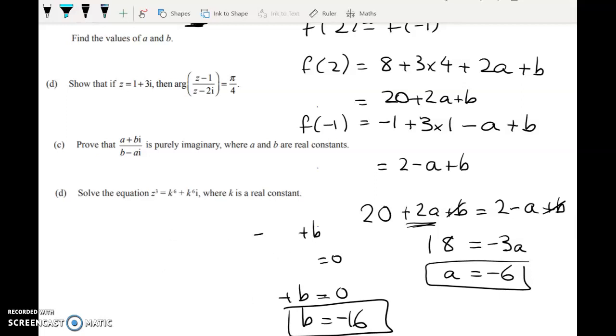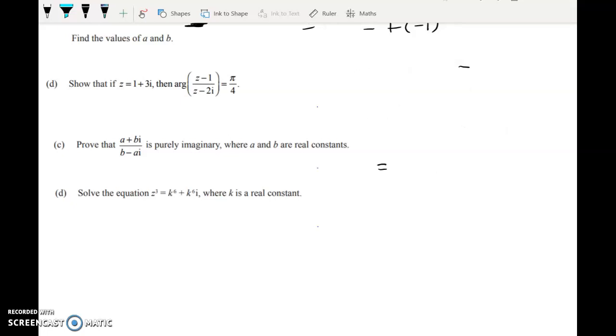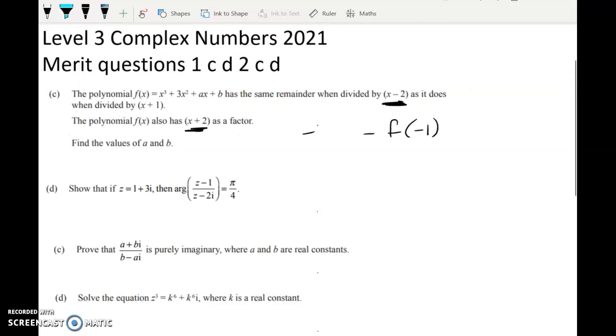In the next question, we have to take a complex number, do some stuff with it, and then show that its argument is pi on four. And remember the arg of a complex number is the angle that it makes with the positive direction of the axis. So if z is up here in the first quadrant, the arg is going to be this angle in here. I think it's easiest to do this one by doing the work before we apply the arg.